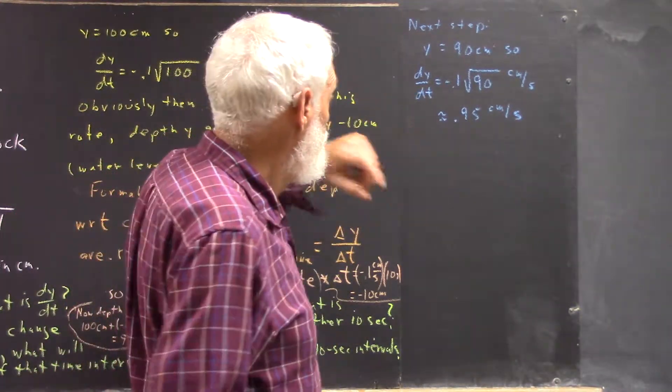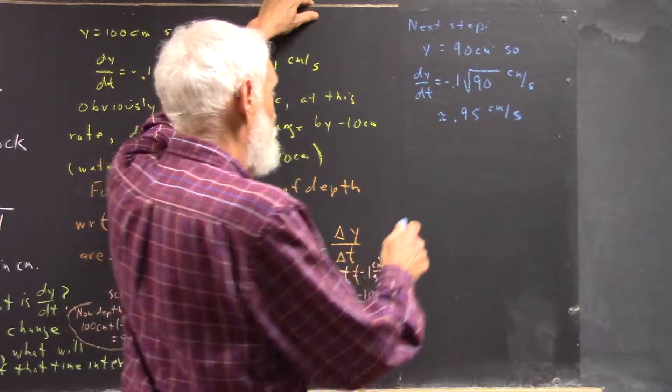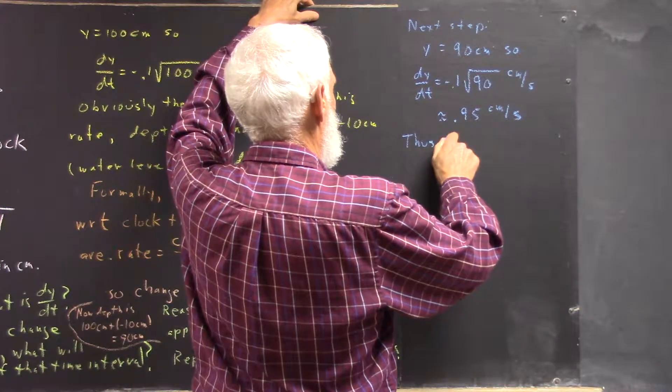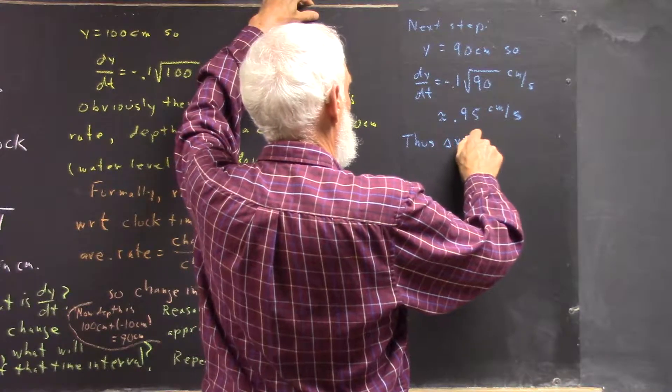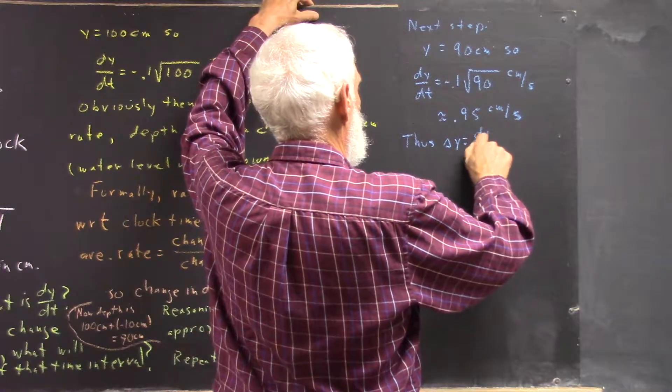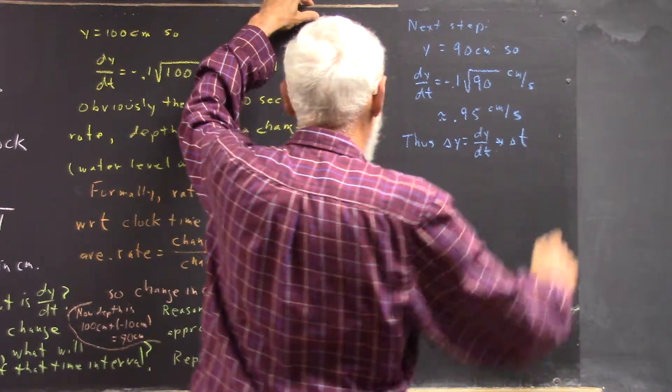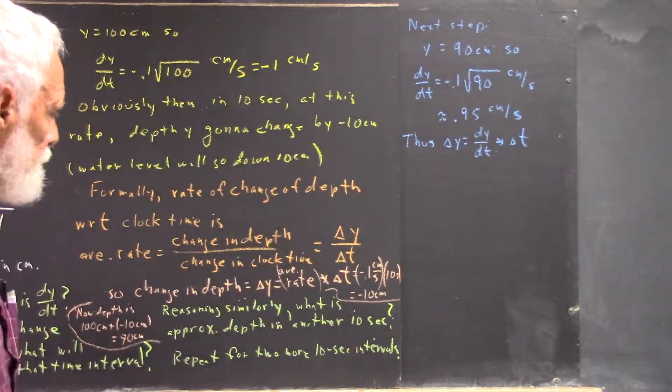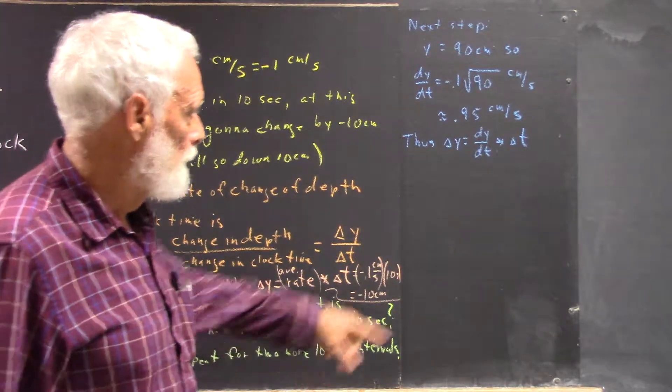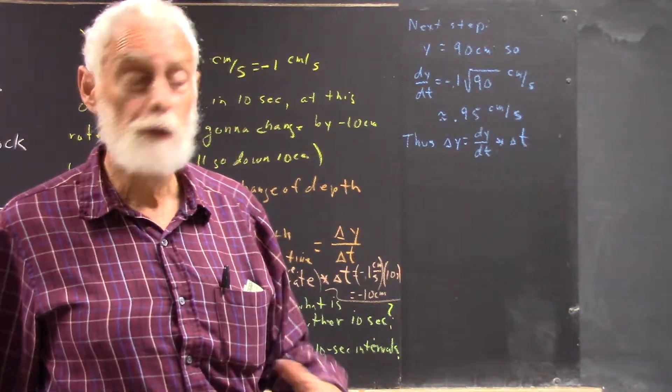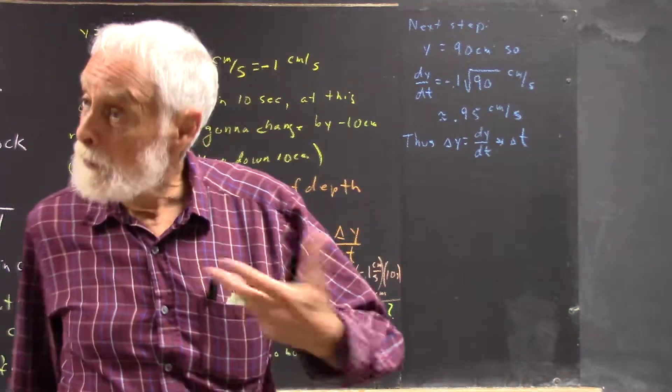So, dy/dt is, what, 95 centimeters? Now, instead of writing out average rate, I'm writing out dy/dt, right? Okay, because we're assuming that's the average rate for the next interval.